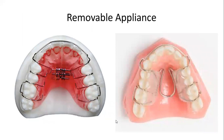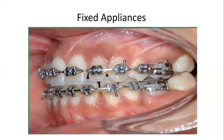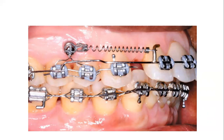These are two pictures of removable appliances. Removable appliances are basically appliances which can be removed by the patient. Fixed appliances, as the name suggests, cannot be removed by the patient. You can see these are the brackets, and on the molars we keep a band with a tube. This is the arch wire. This picture is also a fixed appliance — an intraoral picture of a fixed appliance treatment.